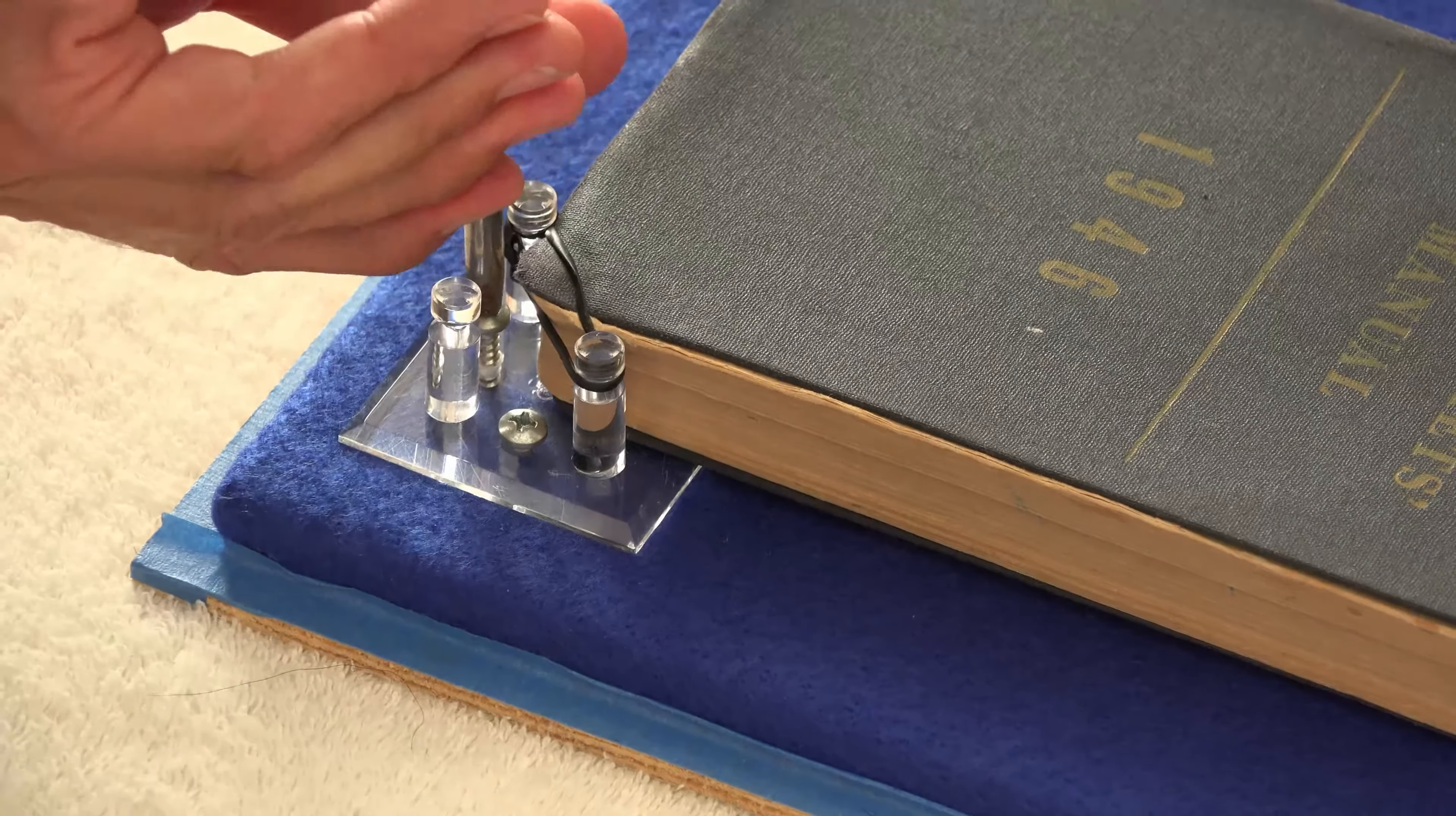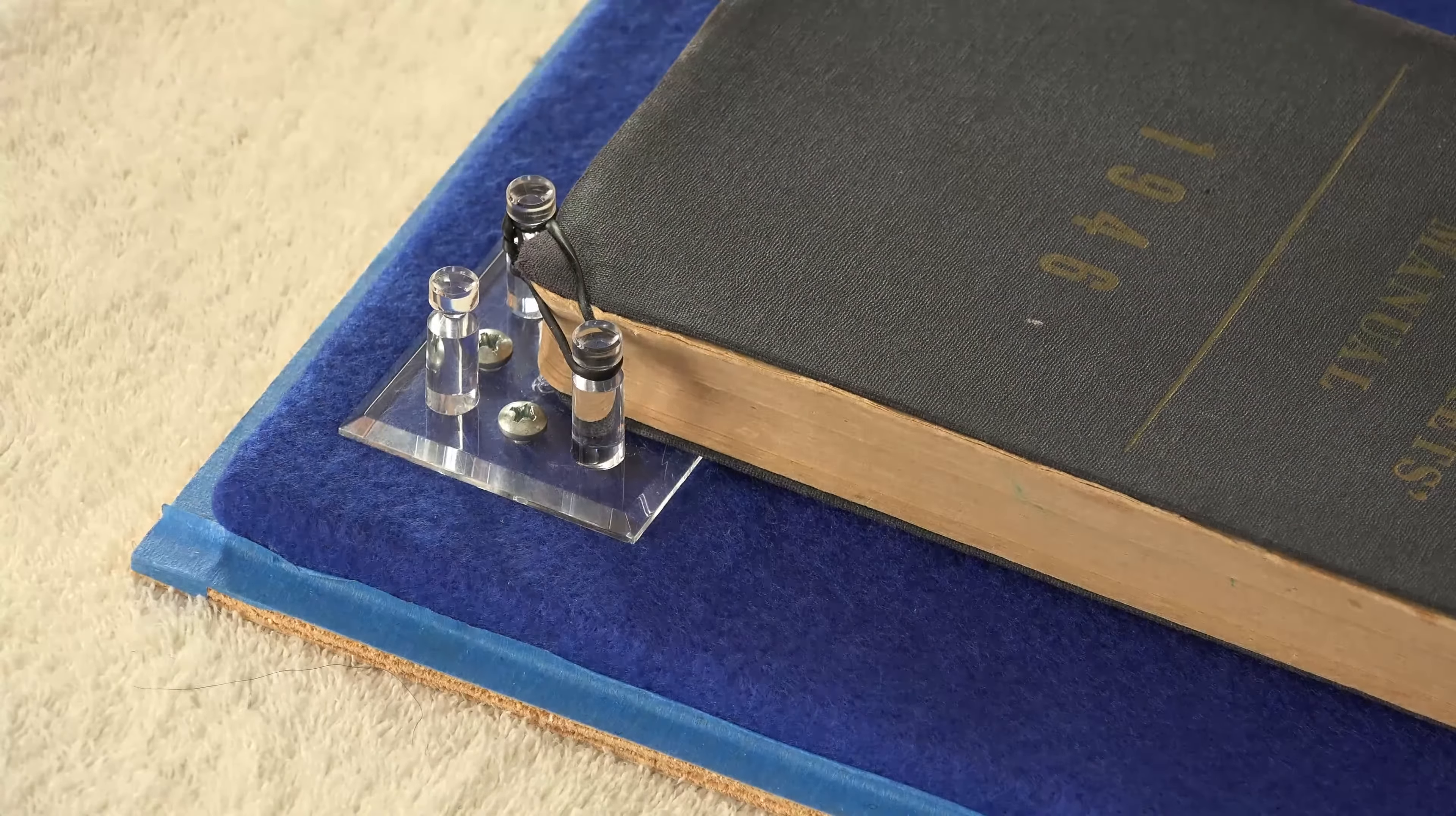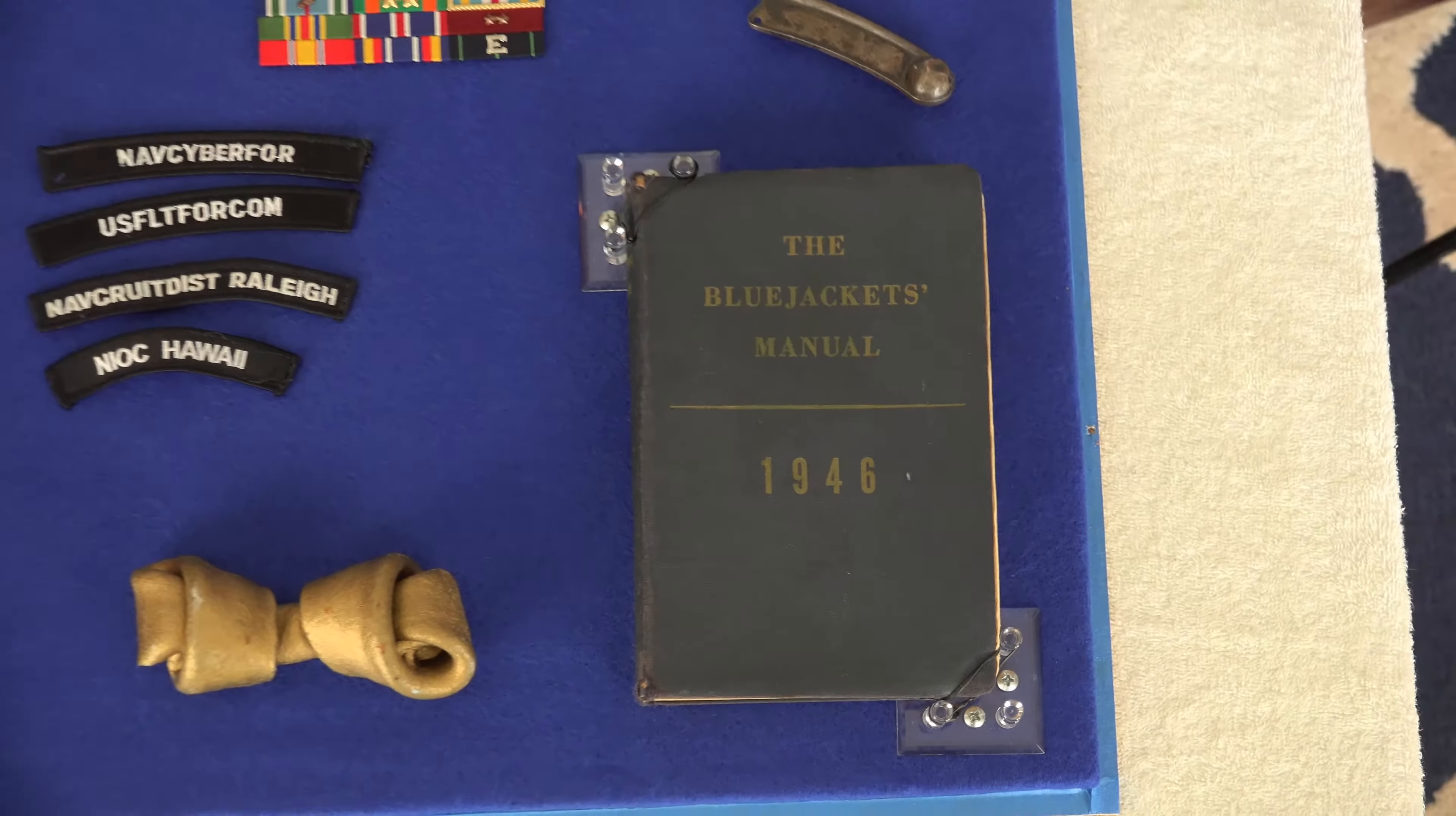So this is probably the heaviest object I have mounted in a shadow box, but a 1946 Blue Jackets Manual handed down from family members that have served before you is definitely worth displaying. And of course you know my favorite part: the presentation.